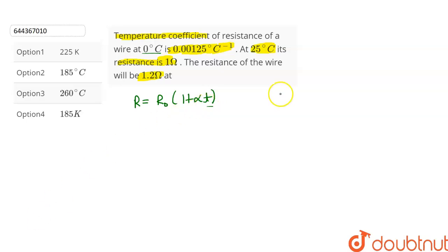It is given that alpha is equal to 0.00125 degree Celsius inverse. And in the first case, it is given that the resistance is 1 ohm at 25 degree Celsius. Let's substitute the values. This will give us 1 is equal to, let the resistance at 0 degree Celsius be R0, into 1 plus alpha is 0.00125,